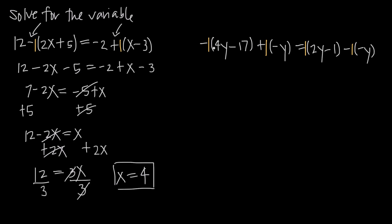We distribute these negative or positive 1s across whatever we have inside the parentheses. Negative 1 times 4y is negative 4y. Negative 1 times negative 17 — the negative signs cancel — and we get positive 17. We had a negative sign, which means both signs of the terms inside the parentheses are going to change. So instead of positive 4y we got negative 4y, and instead of negative 17 we got positive 17.